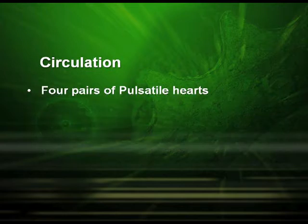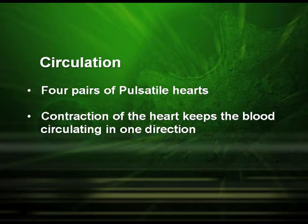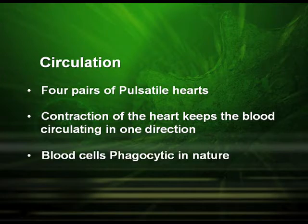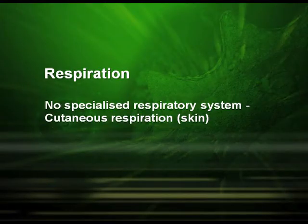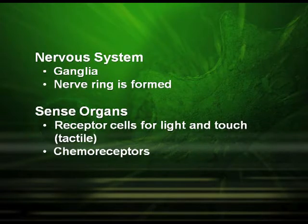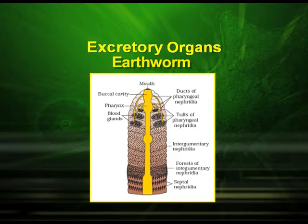They have four pairs of pulsatile heart. The contraction of the heart keeps the blood circulating in one direction. The blood cells are phagocytic in nature. Regarding respiration, earthworm does not have any special respiratory system — they carry on cutaneous respiration, that is, with the help of skin. The nervous system is made up of ganglia and the nerve ring. Regarding sense organs, they have receptor cells for light and touch and they also have chemoreceptors.